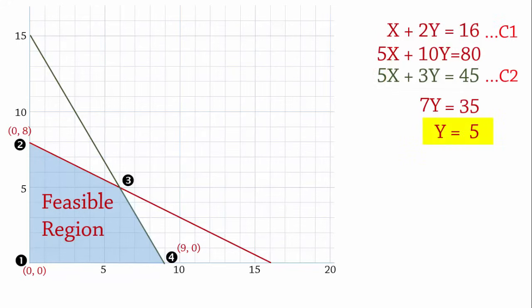To now find x, we substitute y equals 5 into any of these 3 equations. Suppose we choose C1. Then we have x plus 2 times 5 equals 16. That is, x plus 10 equals 16, x equals 16 minus 10, and x equals 6. So the xy coordinates for extreme point 3 are indeed 6 and 5.